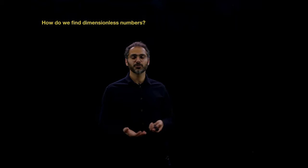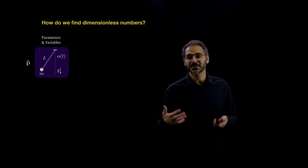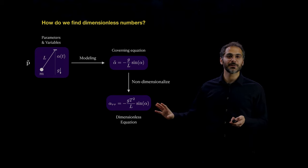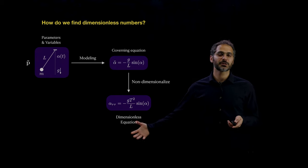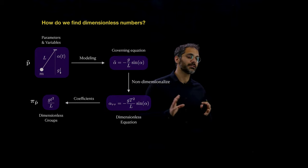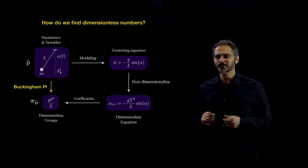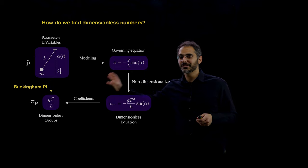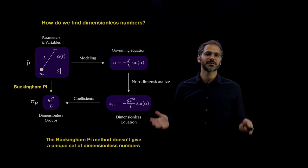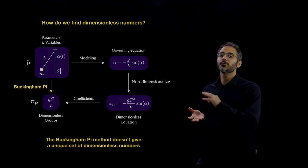Before getting there, let's see how we do it traditionally. Let's say we have a pendulum with inputs l, m, g, and t, and the predicted output is alpha. You get the governing equations — in that case it's a simple system — and you non-dimensionalize the equations, making sure all the variables are dimensionless. Now the coefficients will also be dimensionless, and you just look at the coefficients to see when they're large or small. But there's a shortcut: you can use the Buckingham Pi theorem on the parameters alone to get those dimensionless groups, though it doesn't give you a unique set.